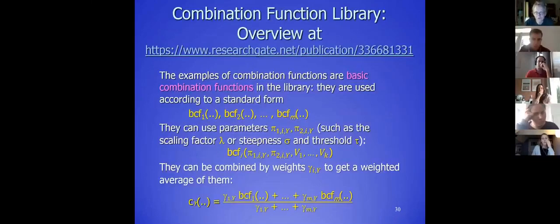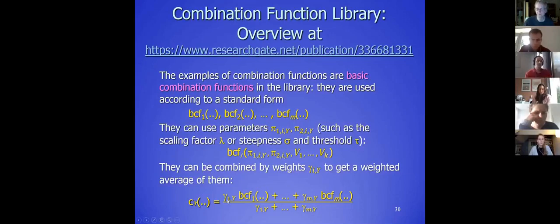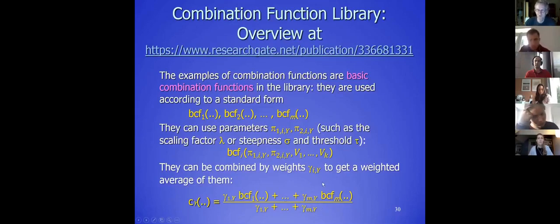These combination functions are in the library, and in principle for each node you select one, but you can also select two, three, or even an arbitrary number. What the software does is take the weighted average of the selected functions. You specify the weights — for example, 0.5 of the scaled sum, 0.7 of the logistic one, and maybe 0.8 of some other function. You only need to know that you can use a combination of basic combination functions.